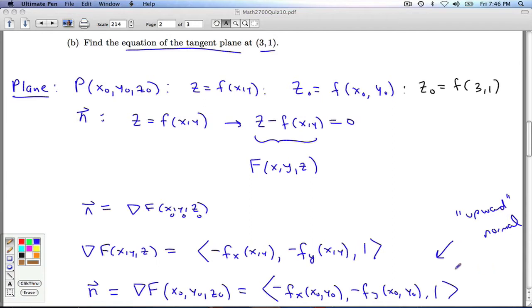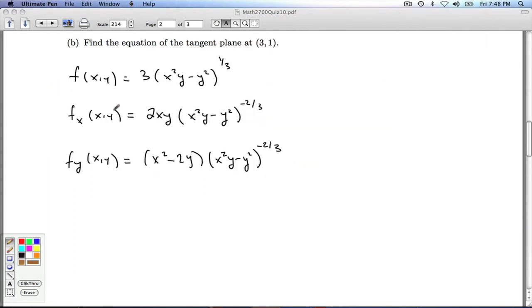Now we need to go back and fill in all the details when x and y are 3 comma 1. All right, so I've recorded here f and its partials in all their glory. And now what I need to do is evaluate them at 3, 1.